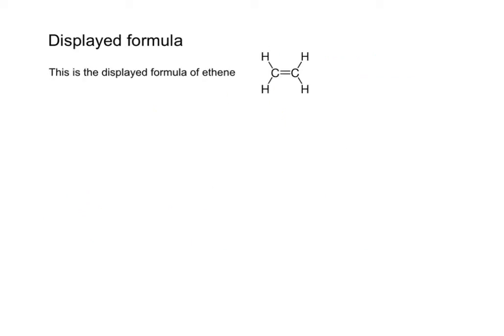That brings us on to displayed formula. Here I've got the displayed formula of a molecule called ethene. The displayed formula is really a diagram that shows the arrangement of all of the carbon and hydrogen atoms, and more importantly, it shows all of the bonds. The molecular formula C2H4 tells me, because the number of hydrogens is double the amount of carbons, that it's an alkene.